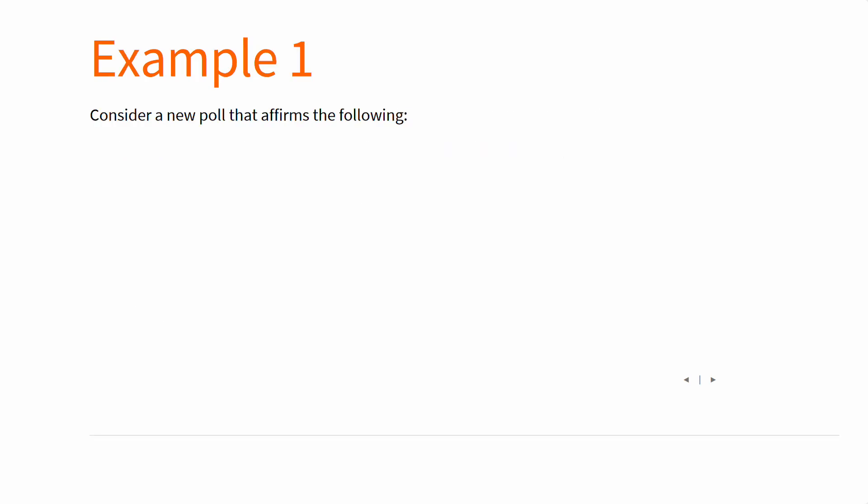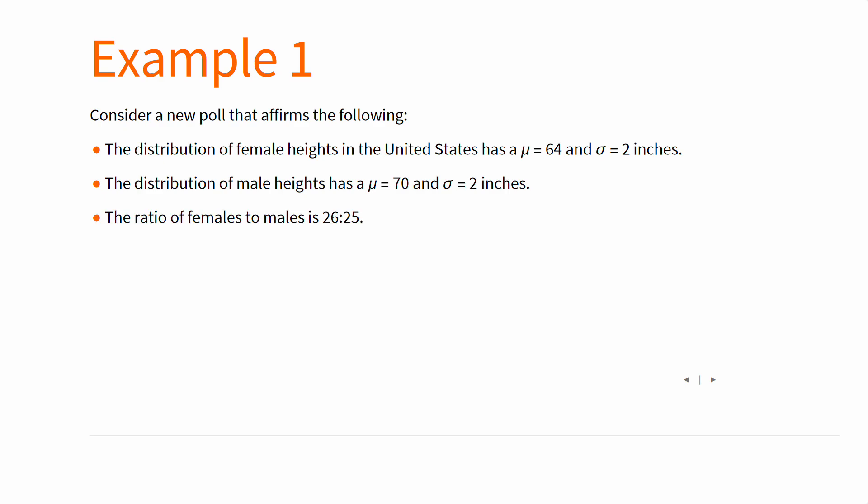For example, consider a poll in the United States saying female heights have an average of 64 inches and male heights have an average of 70 inches, and all have a standard deviation of 2 inches. The ratio of females to males is 26 to 25. Assuming normally distributed height, what's the expected distribution?